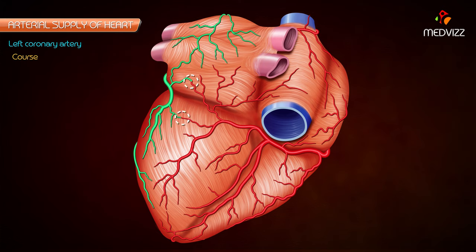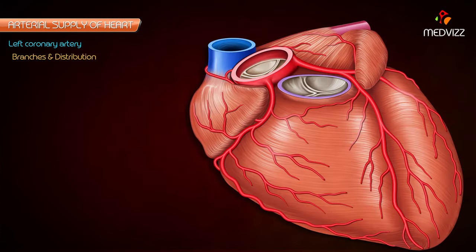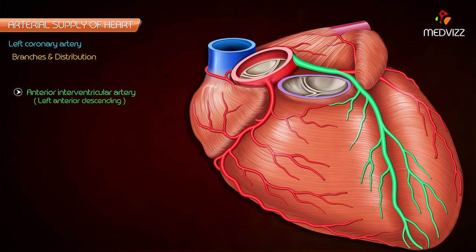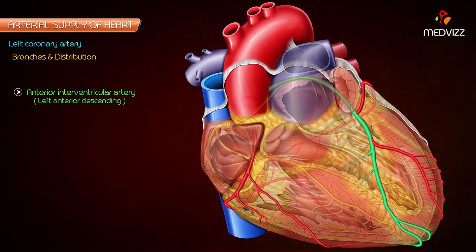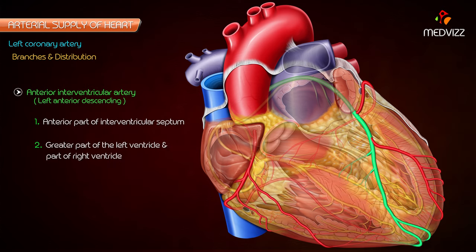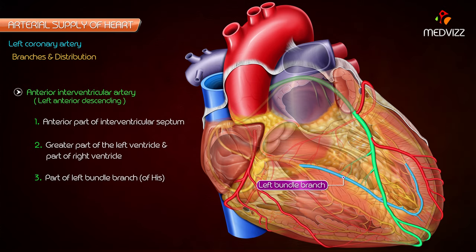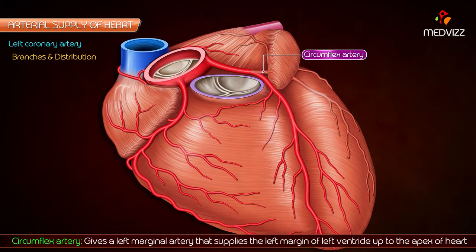Branches and distribution of the left coronary artery: the anterior interventricular artery — also known as the left anterior descending artery — supplies the anterior part of the interventricular septum, the greater part of the left ventricle, part of the right ventricle, and a part of the left bundle branch. The circumflex artery gives off a left marginal artery that supplies the left margin of the left ventricle up to the apex.